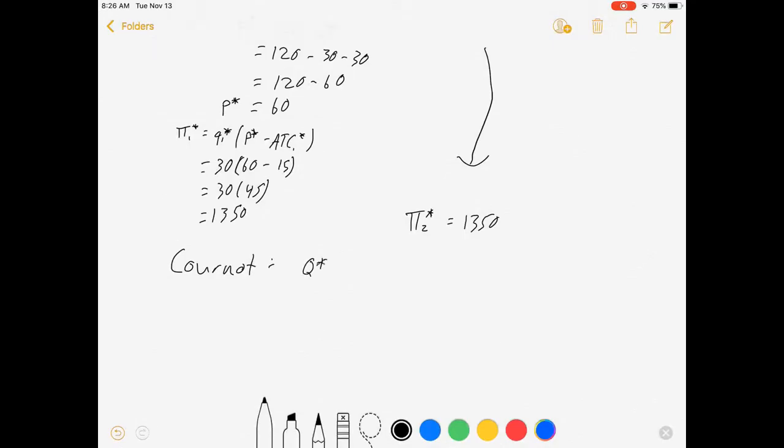Under Cournot, our quantity for the market is 60, our price for the market is 60, our profit for the market is 2700. For each firm, quantity one is 30, quantity two is 30, price is still 60, and their individual profits are 1350.